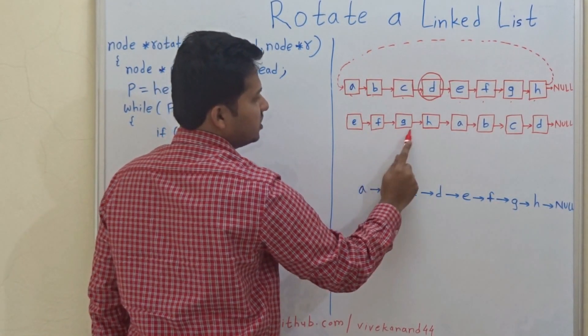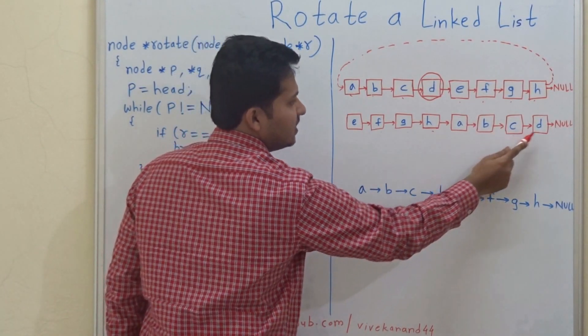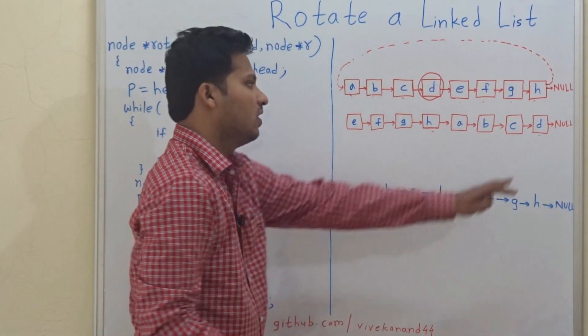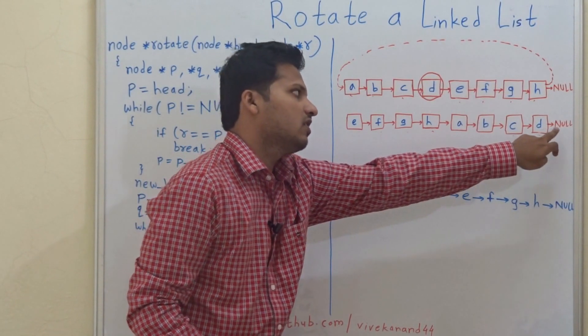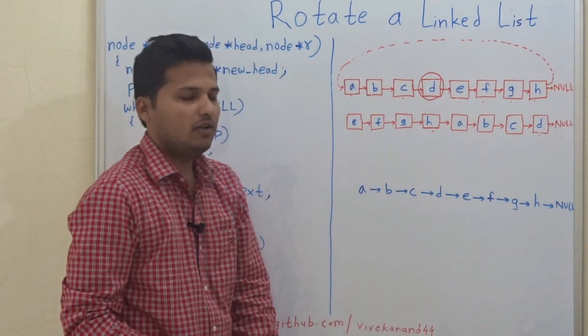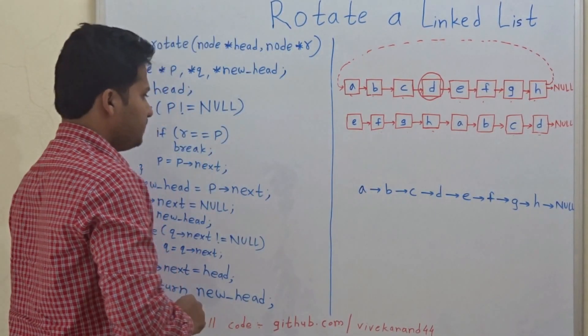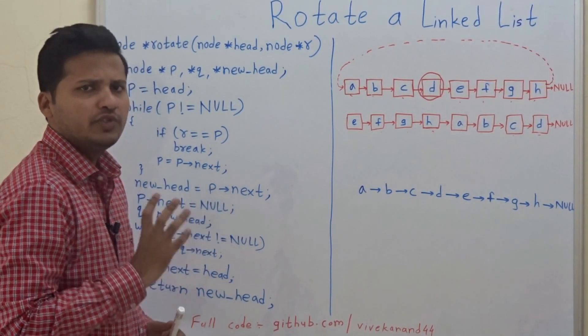So this is the answer E, F, G, H, A, B, C, D and it will be connected to null. The D will be connected to null. So now let us see how to do this.